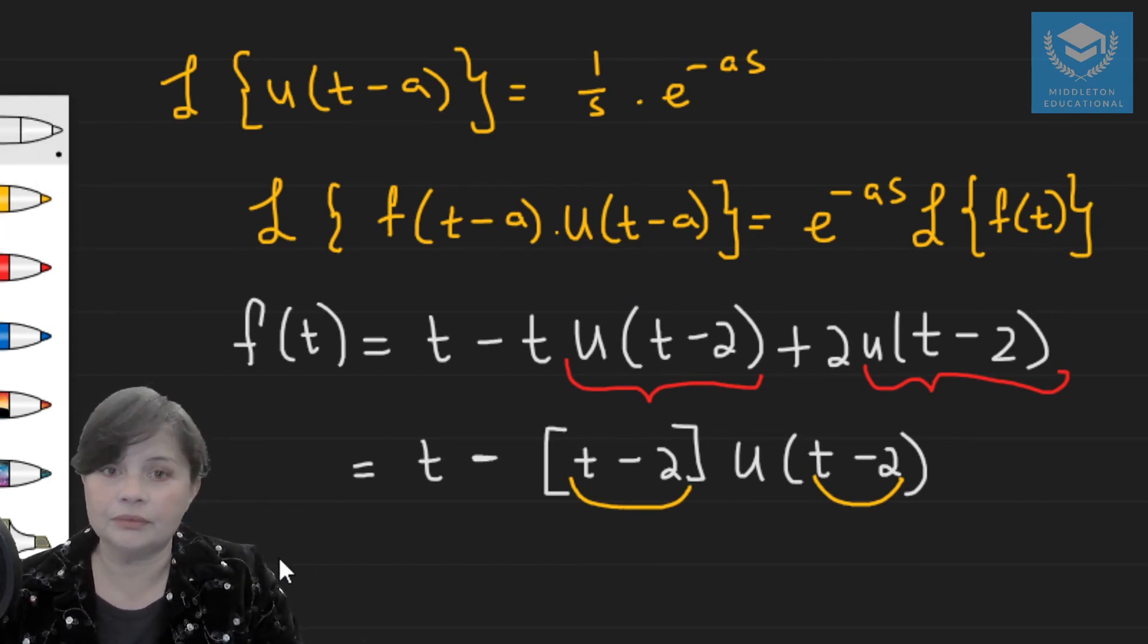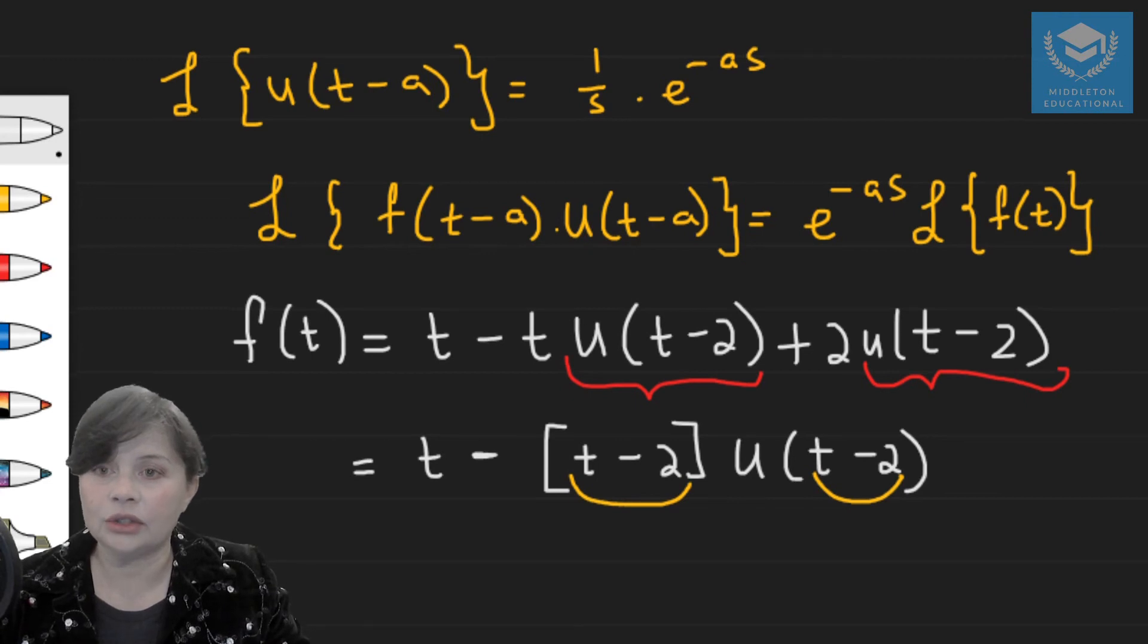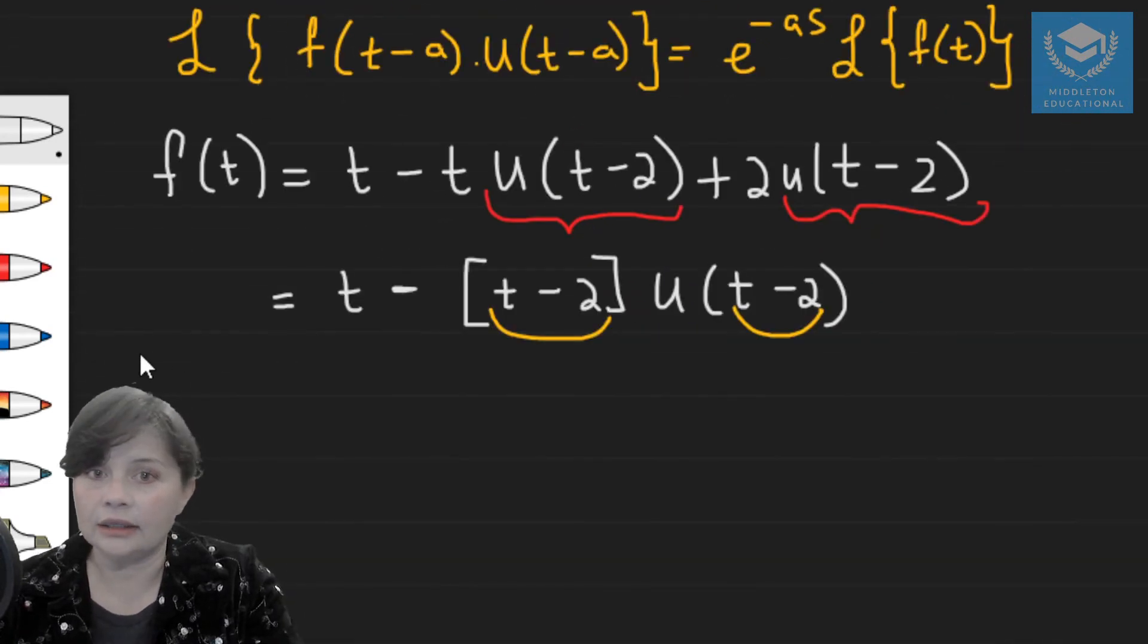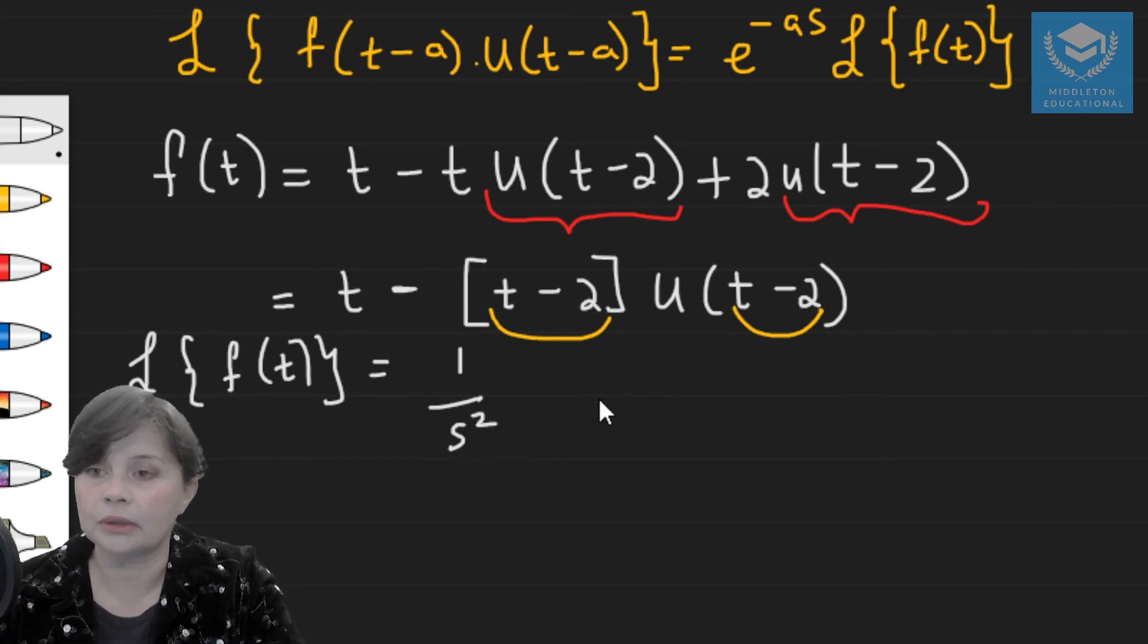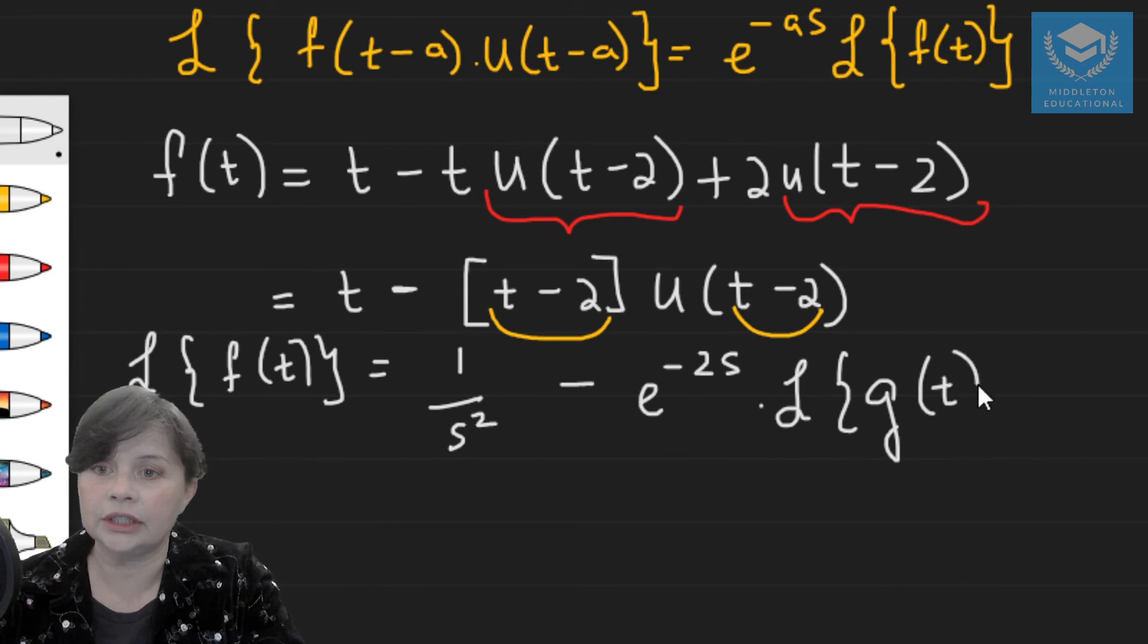So now if I was to take the Laplace transform and I say transform of f(t), your transform of t is just going to be 1 over s squared, and then this is going to be e to the minus 2s times the transform of g(t).